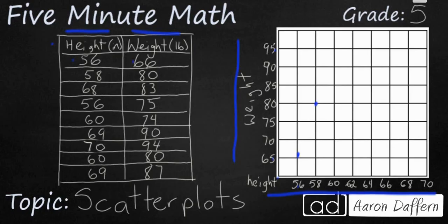We have 68 and 83 is going to be right around here. The fourth pair is going to be 56 and 75. So back to 56. You notice we have two different weights on this same height of 56 inches. And sometimes you will get that with scatter plots. 60 and 74 is going to be right here a little bit underneath 75. Our next point is 69 which is almost all the way over to the end and 90 so that is going to be up top here.